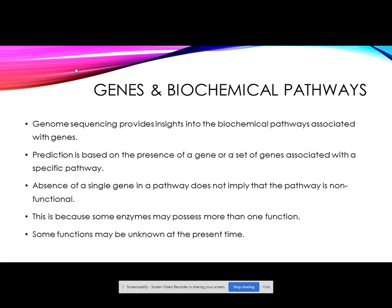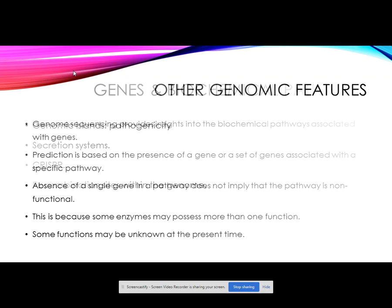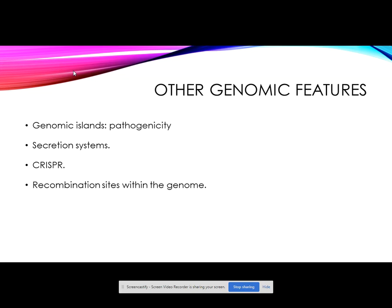Phenotypic screening can be conducted as a prelude to genome sequencing in order to identify specific enzymes. Other genomic features researchers may be interested in include genomic islands such as those associated with pathogenicity, secretion systems also associated with infectious cycles, CRISPRs which may be useful for genotyping of bacterial strains, and recombination sites within the genome to identify horizontal gene transfer events.